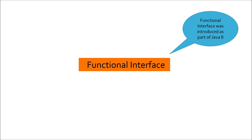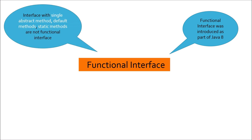Moving to the next misconception: an interface with a single abstract method plus default methods and static methods is not a functional interface. Default and static methods were introduced in Java 8, and both provide implementation, so they are not abstract methods. Therefore, if you have a single abstract method, you can have any number of default and static methods and the interface will still be called a functional interface.